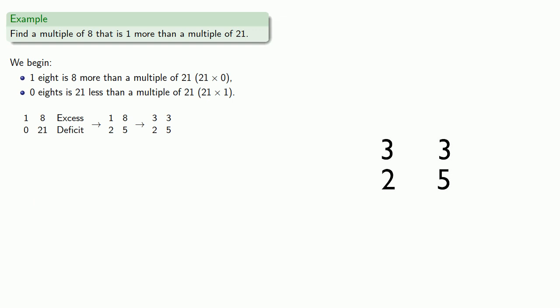And we can continue. Subtract 3 from 5. Multiply the corners and add, and replace. And so we can read our new bottom line: 5 eights is 2 less than a multiple of 21.